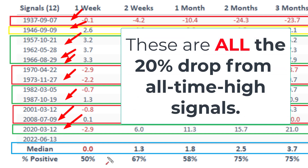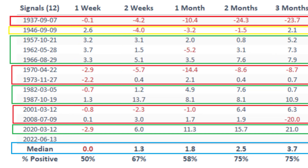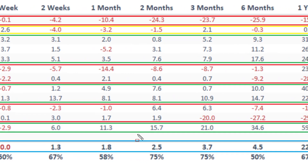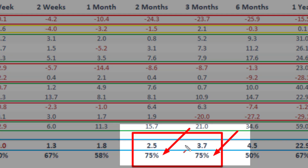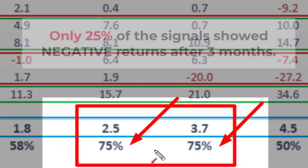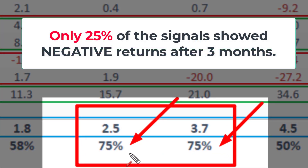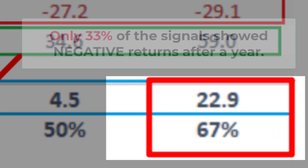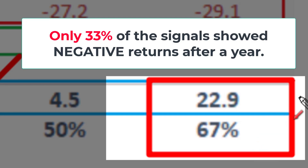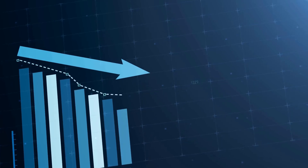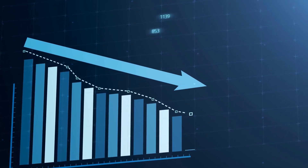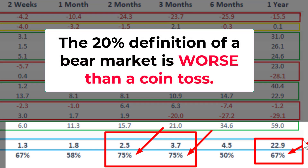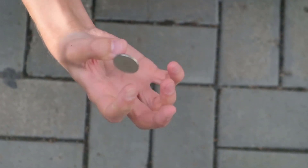Here's the bottom line. After about two or three months from a 20% drop in the stock market, 75% of the signals are positive — which means only about 25% are negative after two or three months. And after one year, only one-third is negative because 67% is positive. Remember, for a bear market you need to see negative returns, not positive returns. So the 20% definition of a bear market is worse than a coin toss.